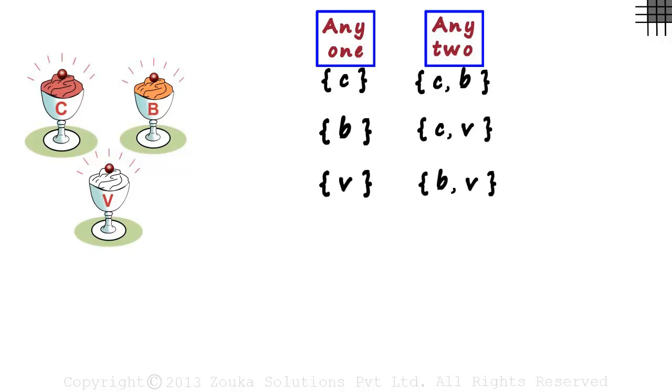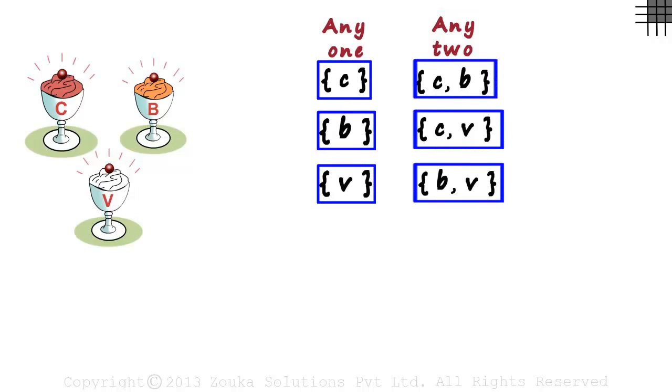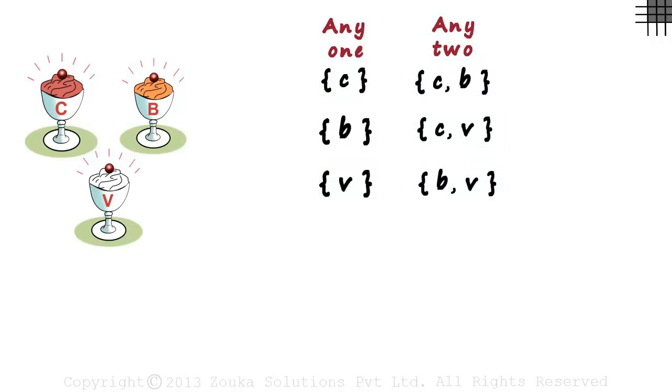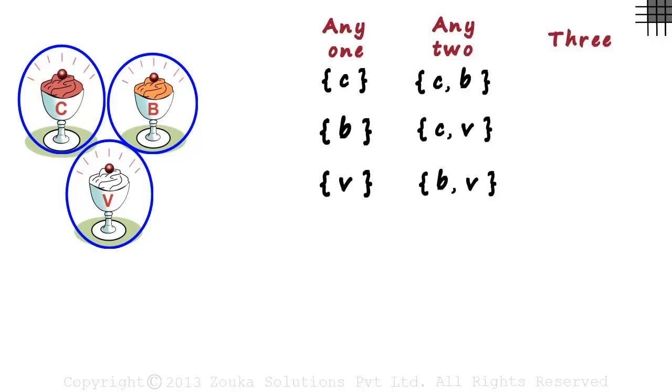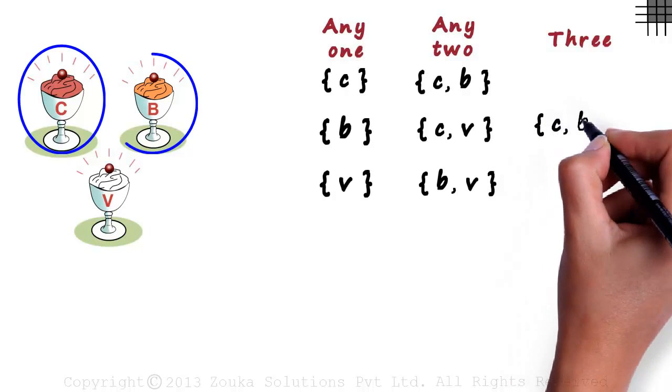In each of these scenarios, three sets were formed. Each of these sets is a different possibility. But what if you feel like having all three together? There exists only one possibility in this case: a combination of chocolate, butterscotch and vanilla.